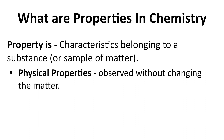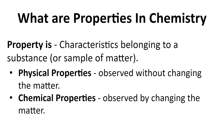There are physical properties, which can be observed without changing the substance, and chemical properties, observed by changing it. As mentioned in the previous video, 'chemical' implies that some sort of change is happening, whereas 'physical' means you can observe it without changing the substance.